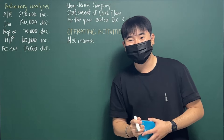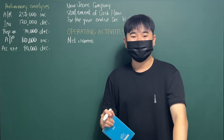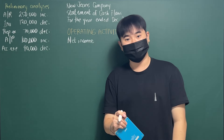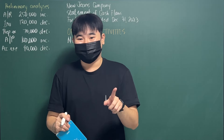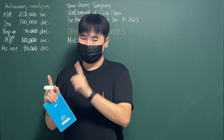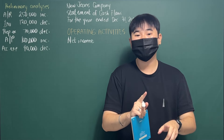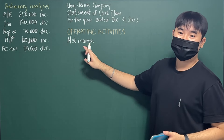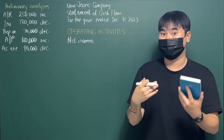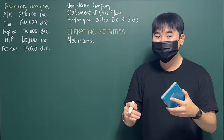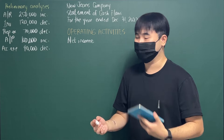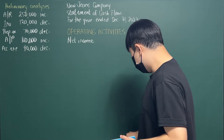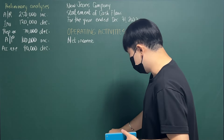Where is the net income? The problem doesn't directly state it, and no income statement was provided. However, we have a beginning balance of retained earnings, an ending balance of retained earnings, and the dividend declaration. So we can recompute net income using the statement of retained earnings equation — working backwards. Retained earnings at beginning: $2,000,000. Add net income (X). Deduct dividends declared: $350,000. Retained earnings at end: $3,650,000.